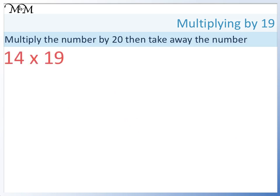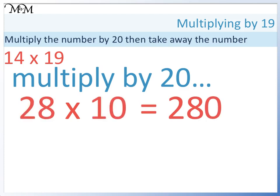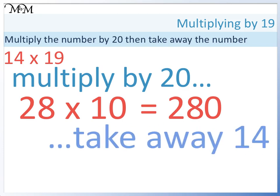Let's look at an example: 14 times 19. We will multiply 14 by 20. We can do this by multiplying by 2 and then by 10. 14 times 2 equals 28. 28 times 10 equals 280. Therefore, 14 times 20 equals 280. We have 20 lots of 14. We only want 19 lots of 14, so we need to take away 1 lot of 14. 280 take away 14 equals 266.